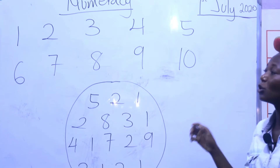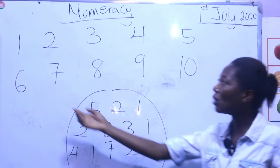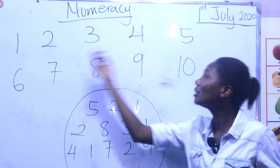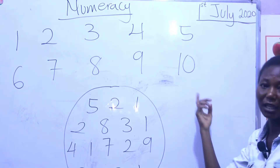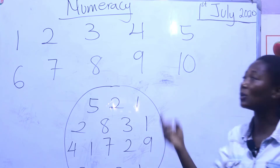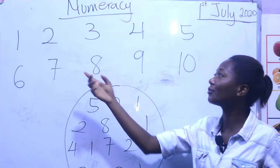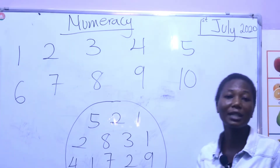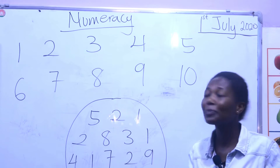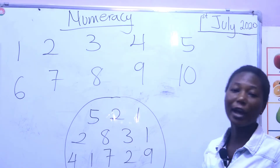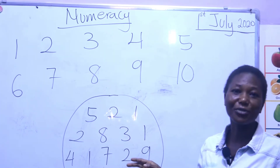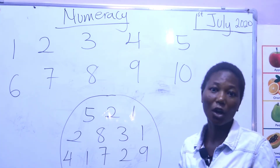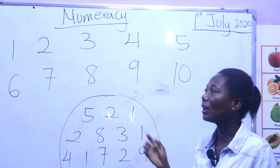Today we are learning numeracy. So we are going to count the numbers from one to ten. And then after counting the numbers, we are going to identify some numbers.